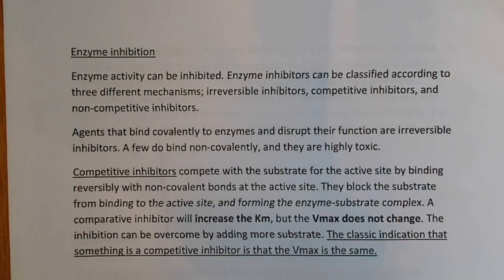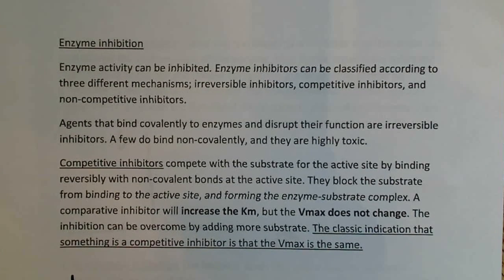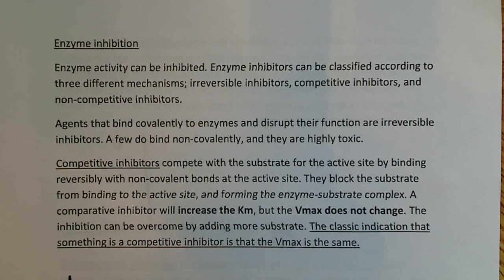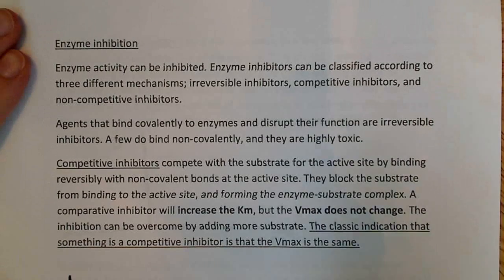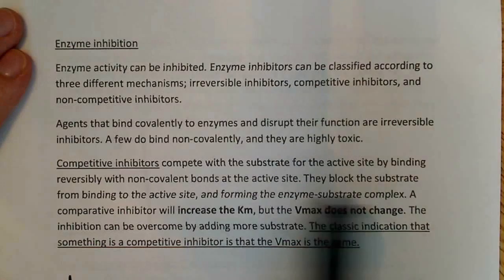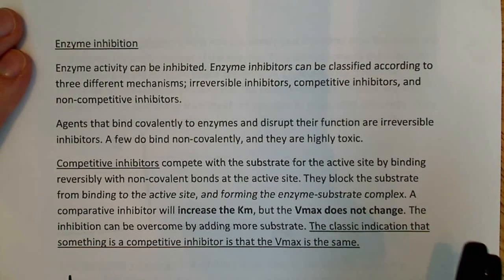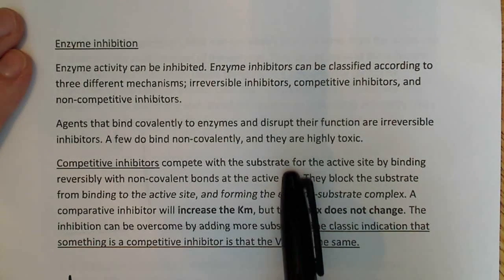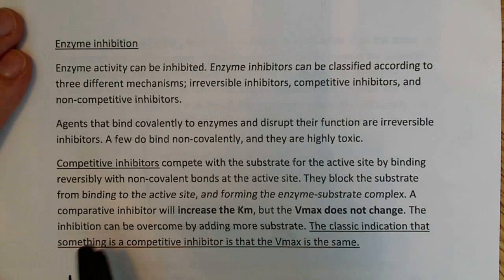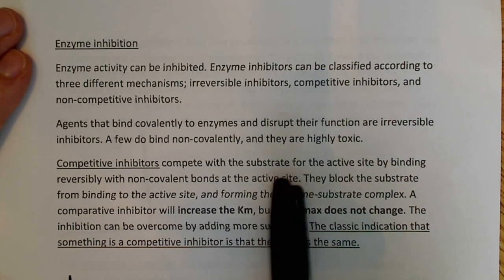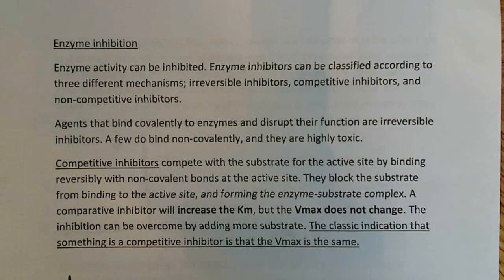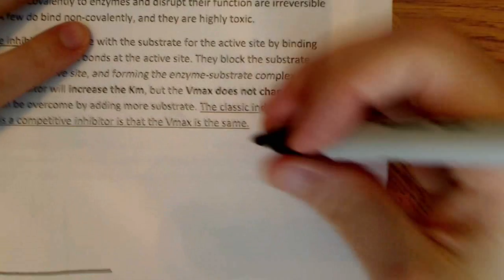Starting with competitive inhibition, probably the most common type and the one to really understand well. Competitive inhibitors compete with the substrate for the active site by binding reversibly with non-covalent bonds at the active site. Whatever inhibitor you're using is going to compete with the substrate for binding at the active site of the enzyme.